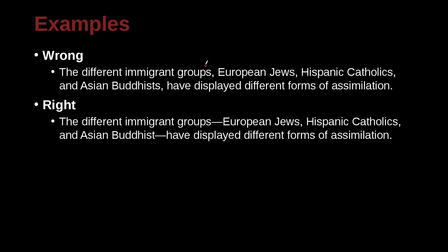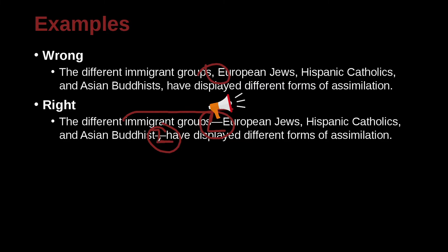The different immigrant groups — European, Jews, Hispanic, Catholics, and Asian Buddhists — have displayed different forms of assimilation. Here we have the example of the dash. The dash sets out this little piece of information: European, Jews, Hispanic, Catholics, and Asian Buddhists. I want to explain what 'immigrant groups' means, so I use a dash. If the explanation goes to the end of the sentence, just put a period. But if you want to write more, add another dash — meaning it's finished — and then you go back to your sentence. We can read this by skipping over the dash: 'The different immigrant groups have displayed different forms of assimilation.' That sentence makes sense, and the dash piece explains exactly what immigrant groups means. If you only use commas, it becomes very confusing — is this listing something or explaining something? So a dash can be very handy.